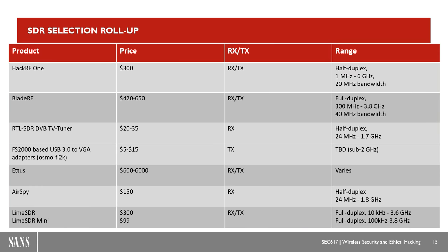This is a quick rollup of the options we've talked through. For cheap receive and transmit we have the RTL-SDR and the new Osmo FL2K software driving USB 3 to VGA adapters. Beyond that, for the best balance of price versus capability, look at the HackRF1, the LimeSDR, and the LimeSDR Mini.